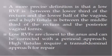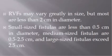A more precise definition: a low rectovaginal fistula is between the lower third of the rectum and the lower half of the vagina, while a high fistula is between the middle third of the rectum and the posterior vaginal floor. Low fistulas are closest to the perineum and can be corrected with a perineal approach, while high fistulas require a transabdominal approach for repair.